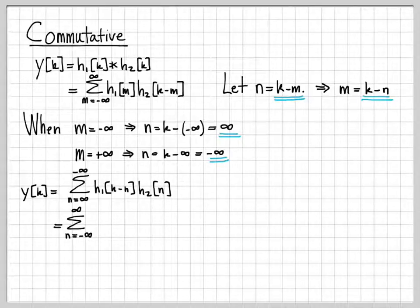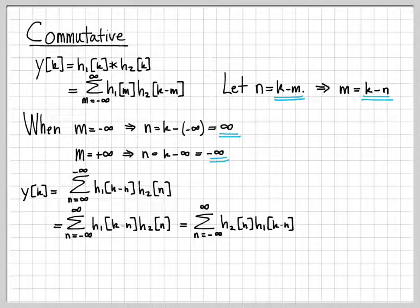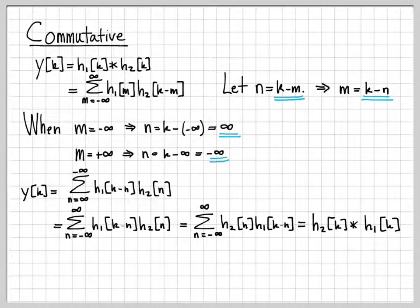We can change the order of the summation. Summing from minus infinity to infinity is the same as summing from infinity to minus infinity, so we can change the order to the conventional way we usually write summations, and the argument does not change. Then I can flip the order of the product — I can take h1 times h2 or h2 times h1. I haven't changed anything about the actual values; I've just changed the order of the product, because multiplication allows that.